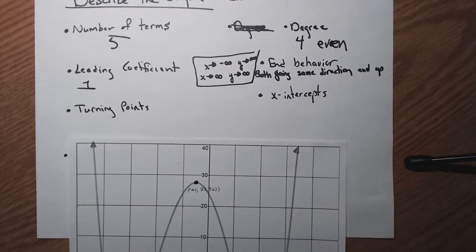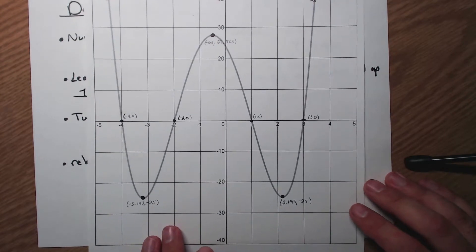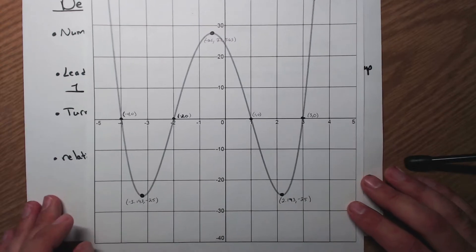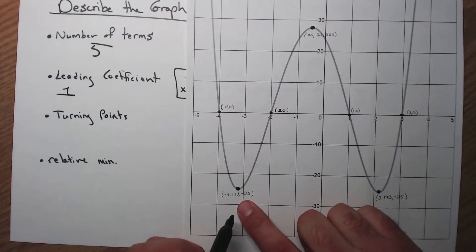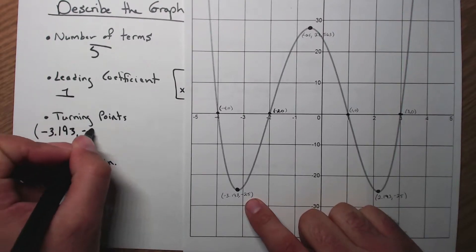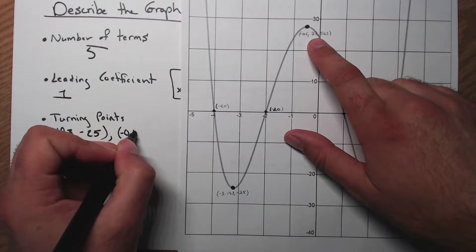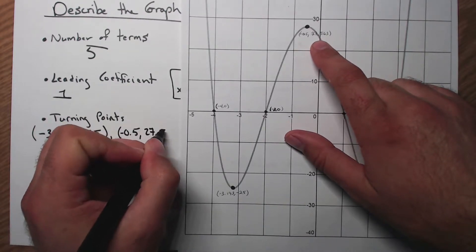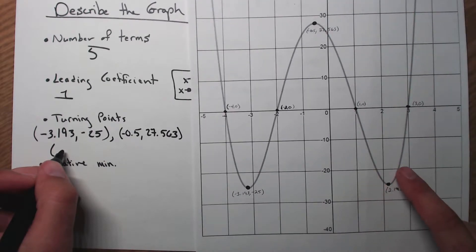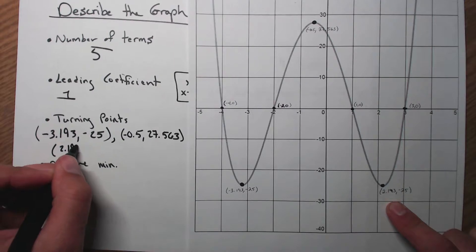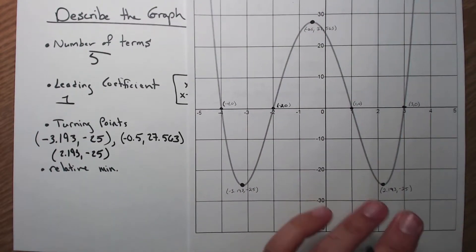Turning points are where I go from increasing to decreasing. Looking at my graph, I have three turning points. The first is at approximately (−3.193, −25). The second, up here, is at approximately (−0.5, 27.563). And the third is at approximately (2.193, −25). I'm just picking out the points I can recognize as turning points — it turned, so it's a turning point.